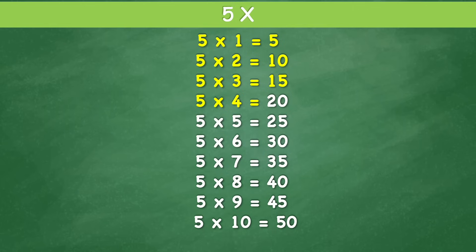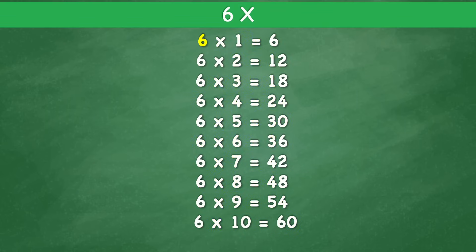5 times 4 equals 20. 5 times 5 equals 25. 5 times 6 equals 30. 5 times 7 equals 35. 5 times 8 equals 40. 5 times 9 equals 45. 5 times 10 equals 50. 6 times 1 equals 6.